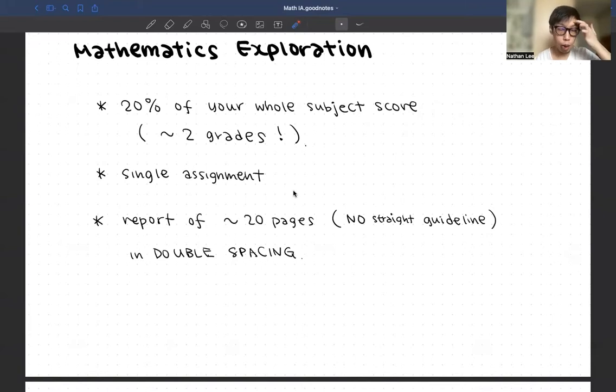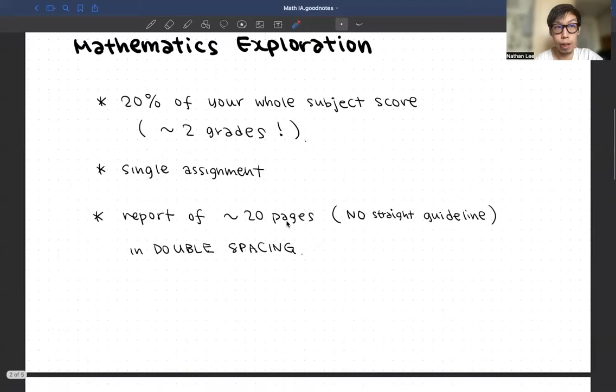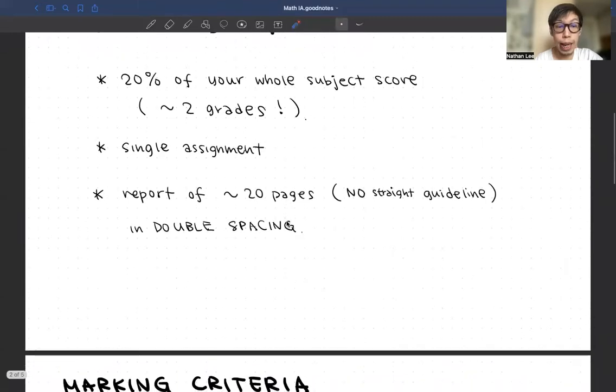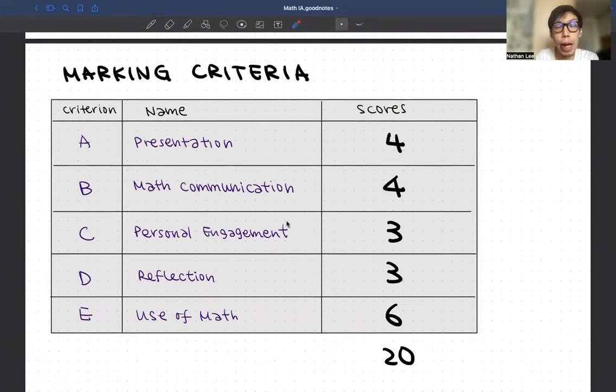They also are expecting you to hand in your report in double spacing. The school teacher will probably tell the student to do so as well in order to fulfill the IBO guidelines. If we are talking about marking criteria, this is 20 points, which is further divided into five main marking criteria, and we're going to discuss a little bit on this.